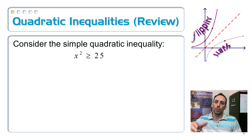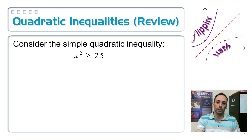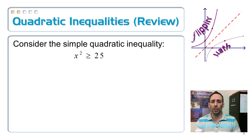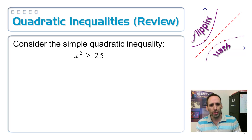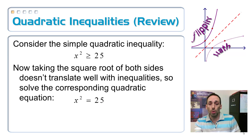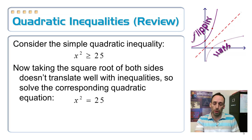Something in between the two numbers or on the outside of the two numbers. So let's look at a simple one: when x² is greater than or equal to 25. What most people want to do is just take the square root of both sides and get x ≥ 5, or maybe ±5. But that doesn't make sense. Instead, we solve the corresponding equation: x² = 25, and we get x = ±5.